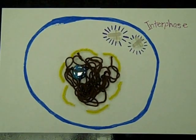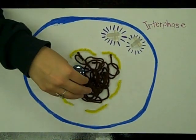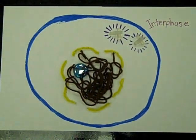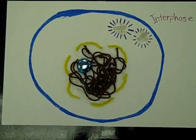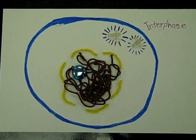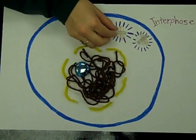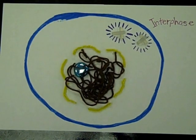In this phase, my DNA, the stuff that makes me who I am, is in my nucleus in the form of chromatin, which means it is coiled up like spaghetti. I have two pairs of centrosomes, made out of my cytoskeleton, which helps me to hold my shape. These will be important later.